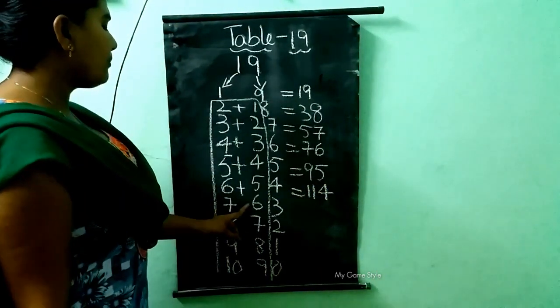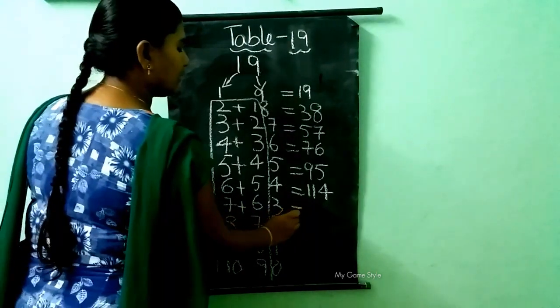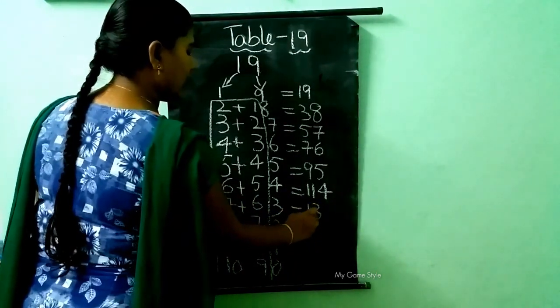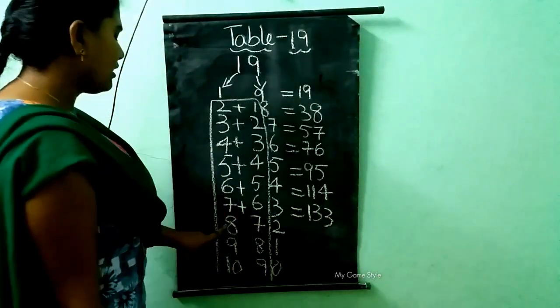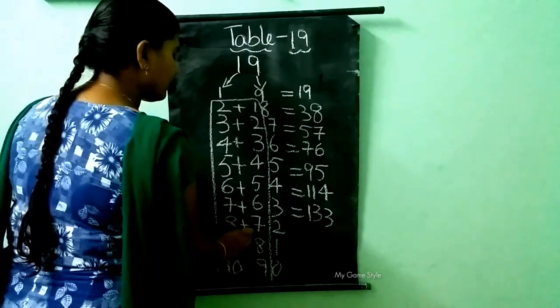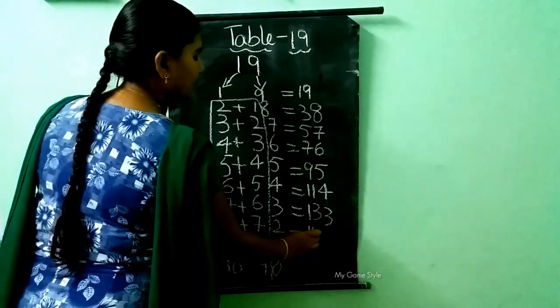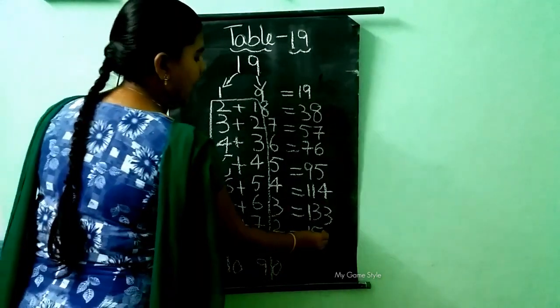Then 7 plus 6. How much, children? 13. Here 3, as it is. And 8 plus 7. How much, children? 15. These 2, as it is.